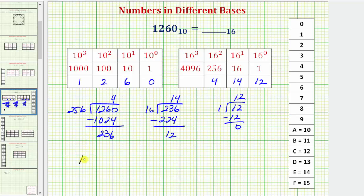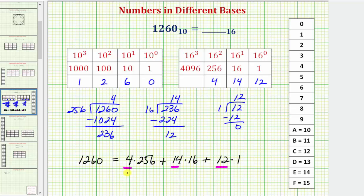So we've discovered that 1260 in base 10 is equal to four times 256, plus 14 times 16, plus 12 times one. These values give us the digits in the place values for base 16. To avoid confusion of having two-digit numbers in any given place value, for 14 we use the letter E, and for 12 we use the letter C. Which means 1260 base 10 is equal to 4EC in base 16.